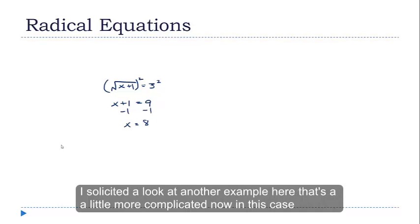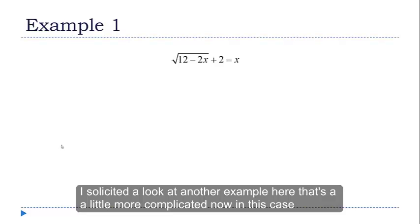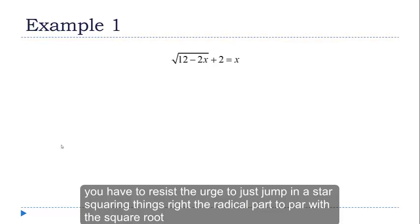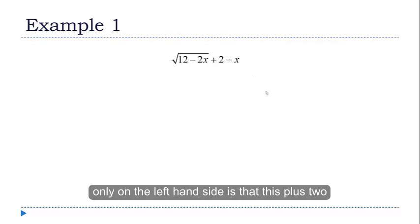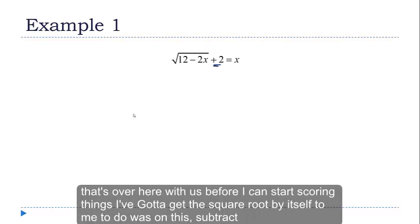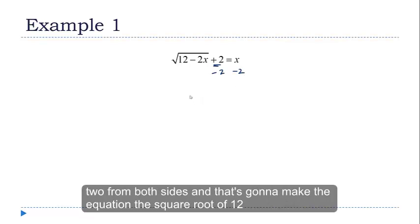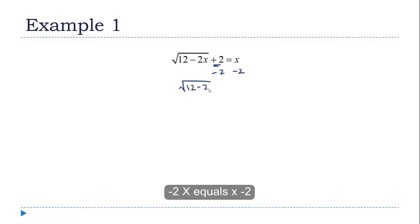Let's take a look at another example here that's a little more complicated. In this case, you have to resist the urge to just jump in and start squaring things. The radical part, the part with the square root, isn't by itself — it's got this plus 2 with it on the left-hand side. So before I can start squaring things, I've got to get that square root by itself. I'm going to subtract 2 from both sides, making the equation: the square root of 12 minus 2x equals x minus 2.